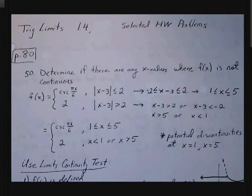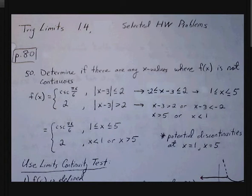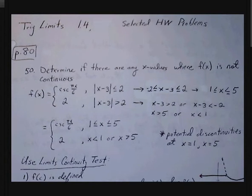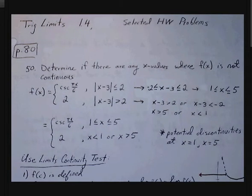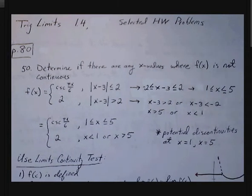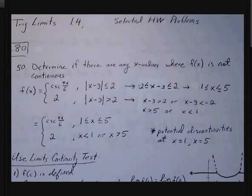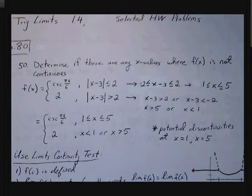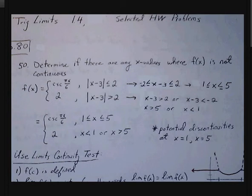Let's look at some trig limits homework. This is on page 80, section 1.4. Let's look at number 50. Number 50 says, determine if there are any x values where our function is not continuous.